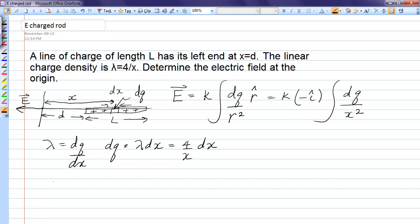I'm going to substitute that into the integral. We will have 4 over x times dx over x squared. Our limits of integration will be from one end of the rod, d, to the other end of the rod, d plus L.